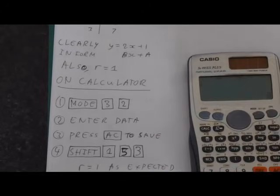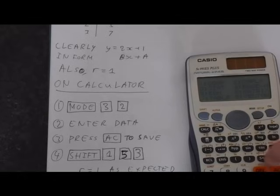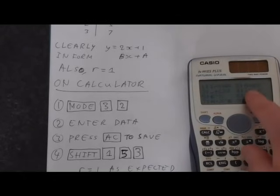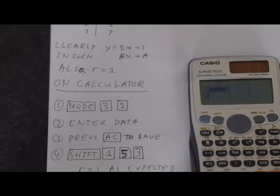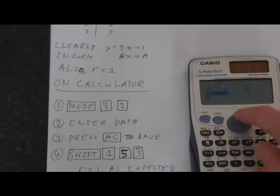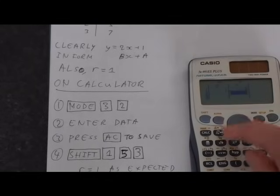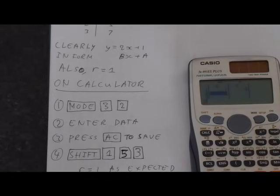To get into the correct mode, we're pressing mode 3, and we want the A plus BX mode, so we'll press 2. That gets us our X and Y series, so let's enter the data. We've got 1, 3, 2. It's quite awkward to enter data on here. 3, and then we've got 7.